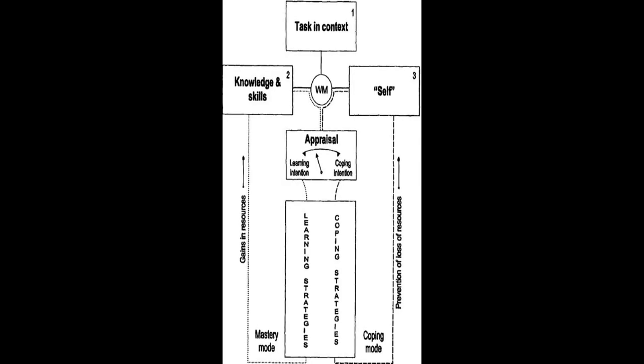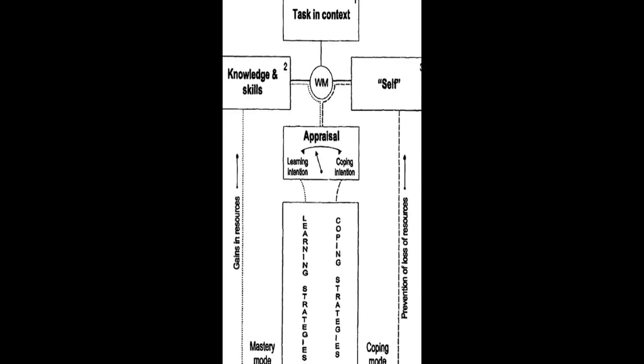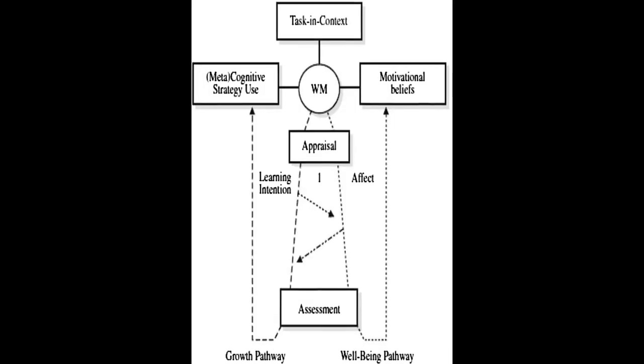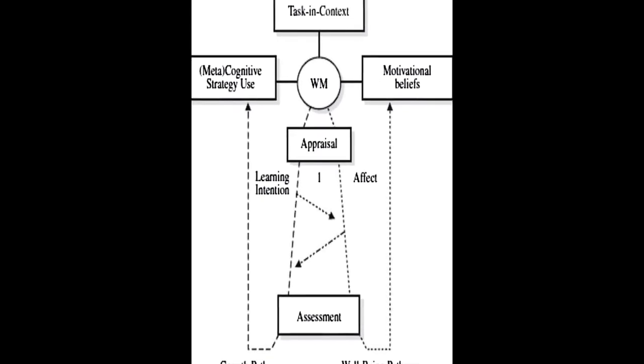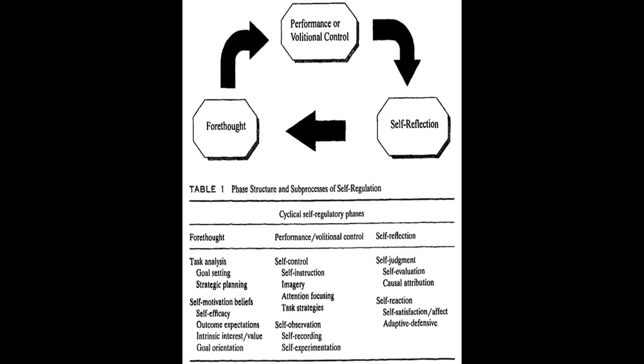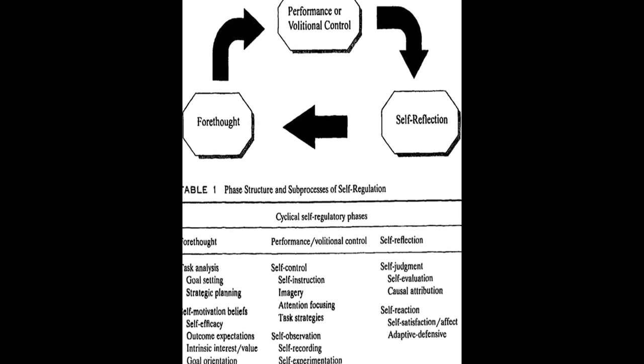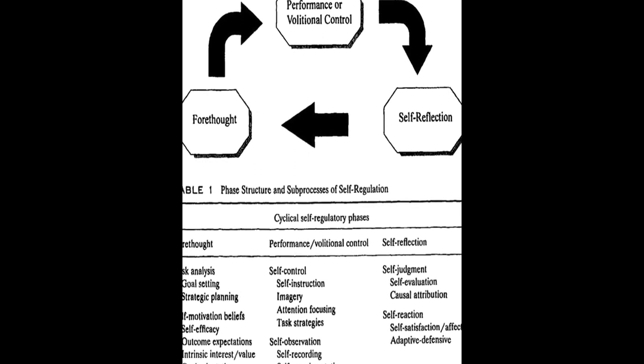Six models of SRL are analyzed and compared in this paper: Zimmerman, Bocarts, Winn and Hadwin, Pintrich, F. Clydes and Hadwin, Jarvella, and Miller. Each model is explored in detail, including its history and development, description, empirical support, and instruments constructed based on the model.